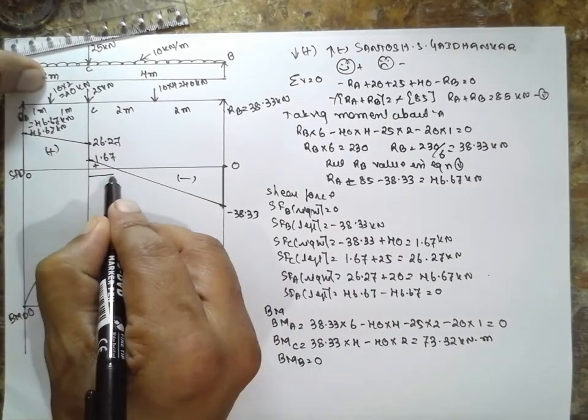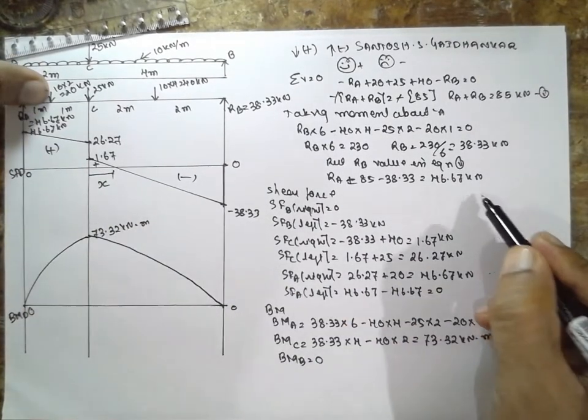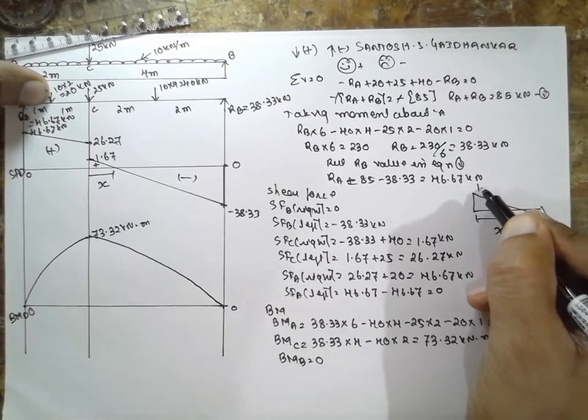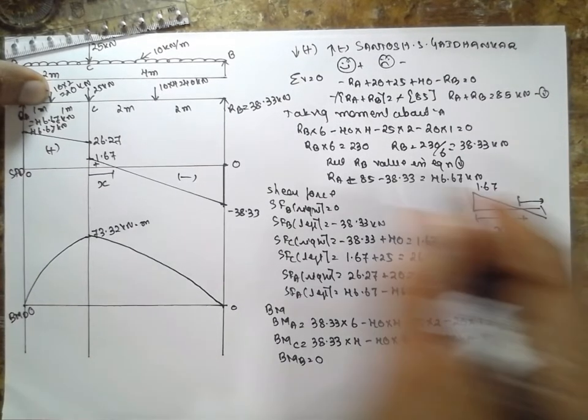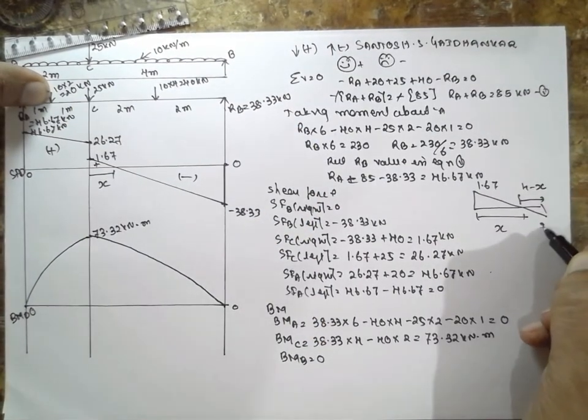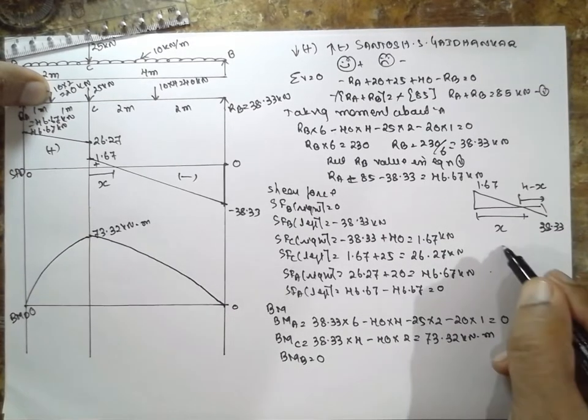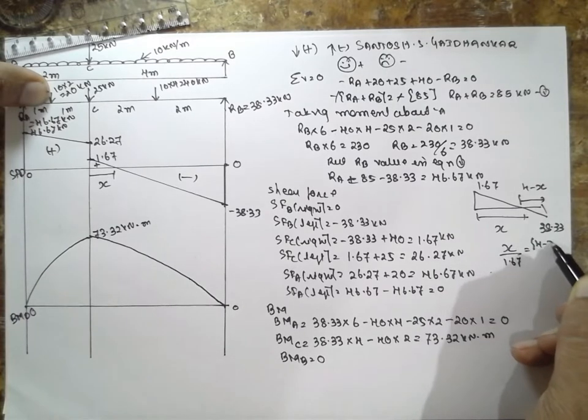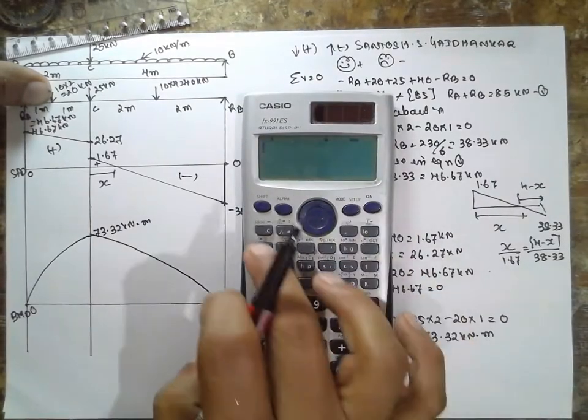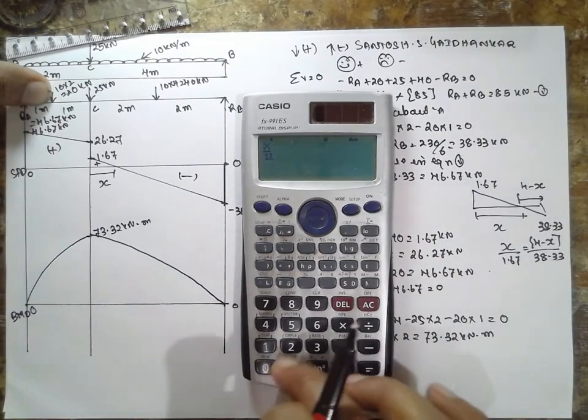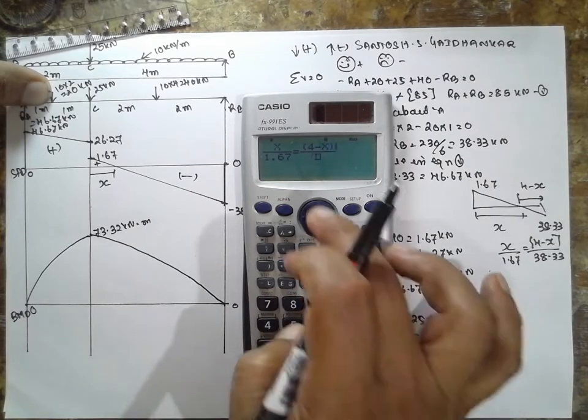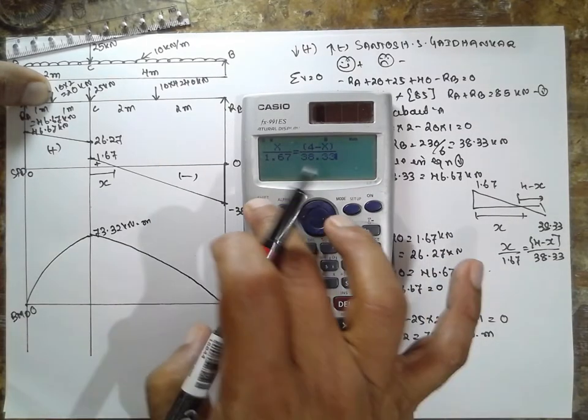Now we have to find out the distance x. Simply construct once again here. This value is x, this is 1.67. This value will be 4 minus x and the value for this is 38. Don't consider the minus sign. x divided by 1.67 is equal to 4 minus x divided by 38.33.